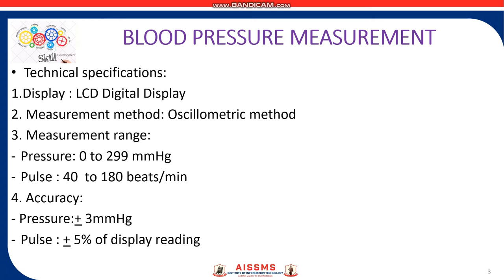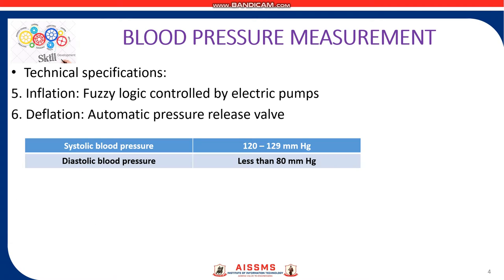The accuracy for pressure is plus or minus 3 mmHg and for pulse is plus or minus 5% of display reading. Fuzzy logic control by electric pump is used for inflation, and for deflation an automatic pressure release valve. The systolic blood pressure is 120 to 129 mmHg and diastolic blood pressure is less than 80 mmHg.